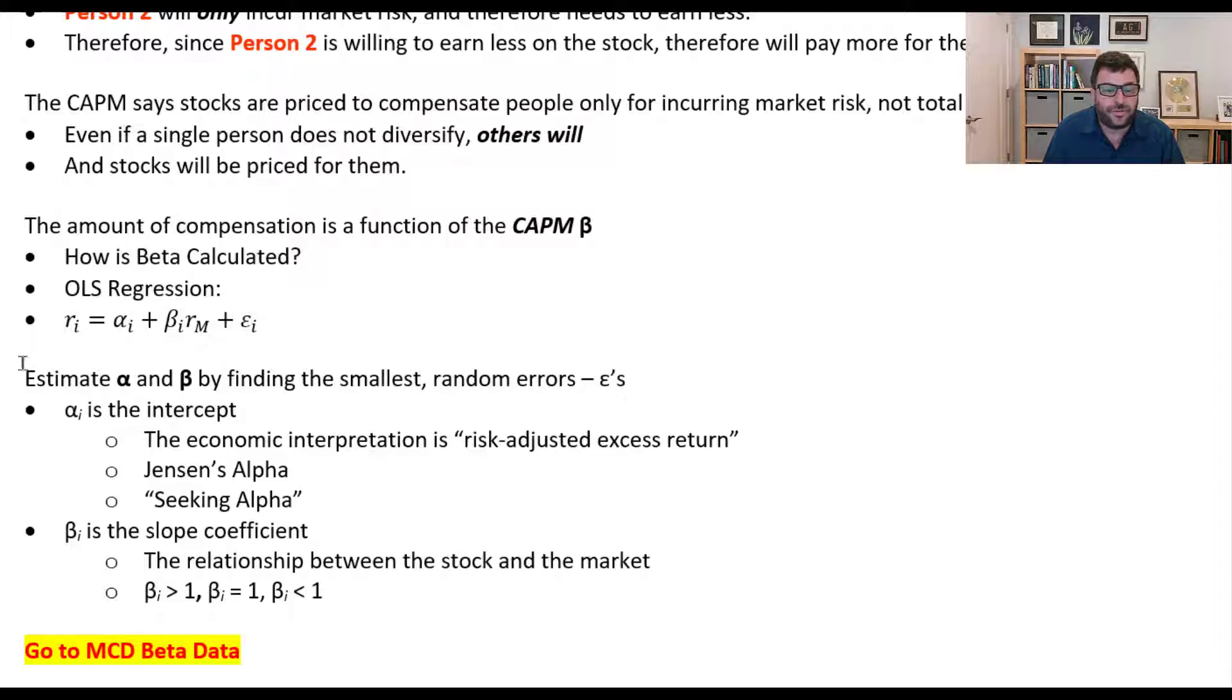Alpha becomes this intercept. Sometimes this is referred to as Jensen's alpha. And there's this website Seeking Alpha that sort of refers to this concept of an alpha. And later on, we'll see that after compensating for risk, if there is any alpha, this is my risk-adjusted excess return. The beta is the slope coefficient, and it's the relationship between the stock and the market. So let me do a quick drawing, and then we'll go to a spreadsheet and look at some data.